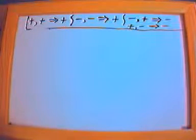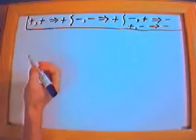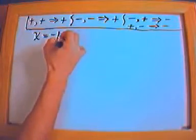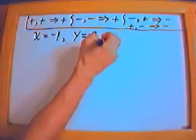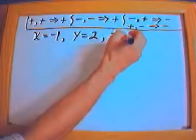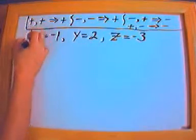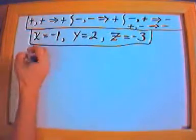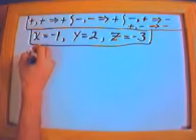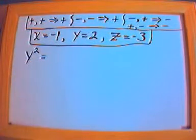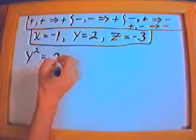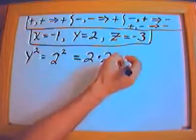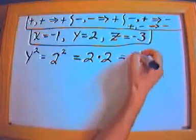For the next set of problems we're going to do some plug-and-chug. We'll say x is equal to negative 1, y is equal to 2, and z is equal to negative 3, and we're going to keep this through all the problems that follow. Let's start: y squared is equal to y times y. In this case y is 2, so 2 squared equals 2 times 2. Positive times positive gives me positive 4.